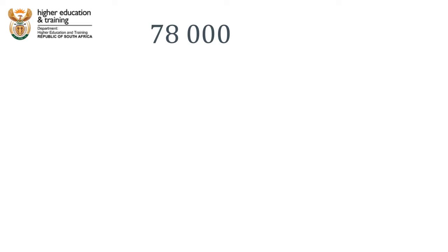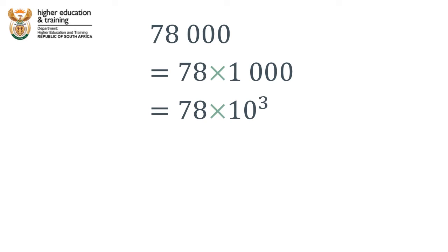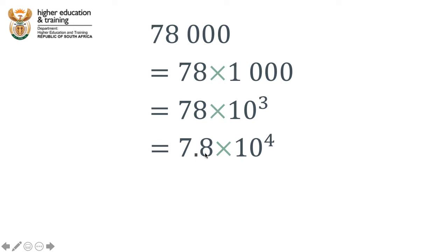Let's take a simple example: 78,000. We know that 78,000 can be rewritten as 78 times 1,000 — that's what 78,000 really means, it's 78 thousands. And we know that 1,000 we can write as 10 times 10 times 10, in other words 10 to the power 3. We can also rewrite this as 7.8 times 10 to the power 4 — not 78 times 1,000, but 7.8 times 10,000. And we've got some tricks we can use in terms of moving the decimal point around.